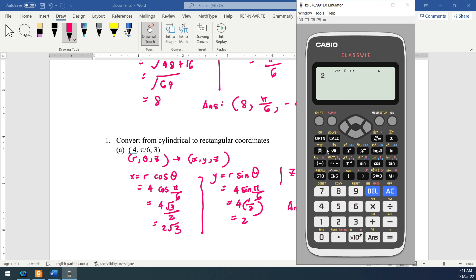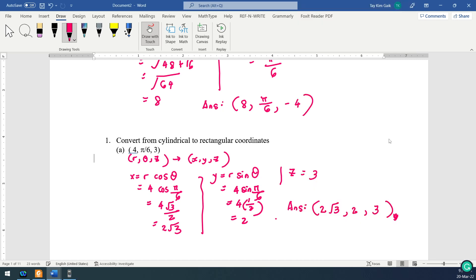Let's check. 2 square root 3. 3.464... Correct. So this is cylindrical to rectangular. Basically like polar to Cartesian by maintaining the coordinate z here.